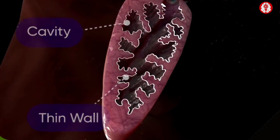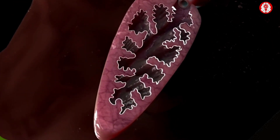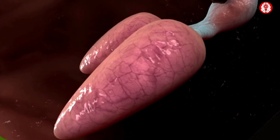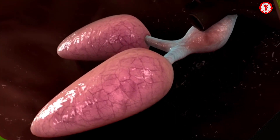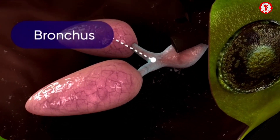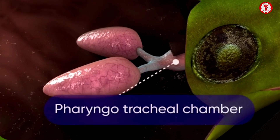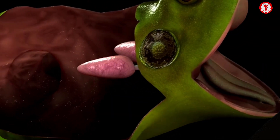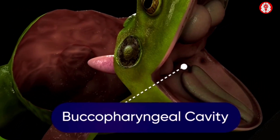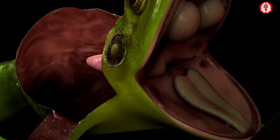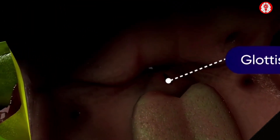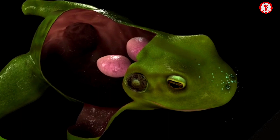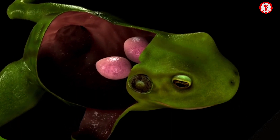Each lung is highly distensible with a wide cavity and a thin wall. The wall is internally provided with numerous folds forming chambers called alveoli. Both lungs lead into a small common chamber called the bronchus. The bronchus in turn opens into a spherical box-like pharyngeal chamber, which opens into the buccopharyngeal cavity by a slit-like glottis.